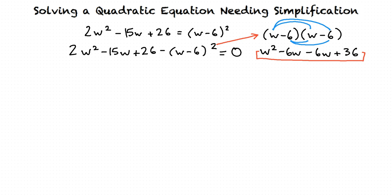Precisely. So now we have 2w squared minus 15w plus 26 minus the quantity of w squared minus 6w minus 6w plus 36, all equal to 0.